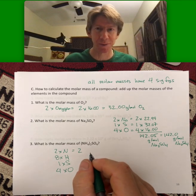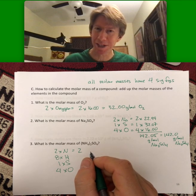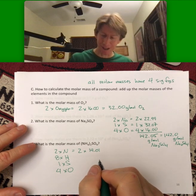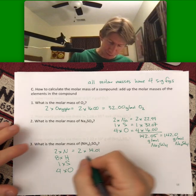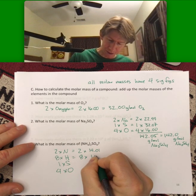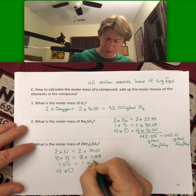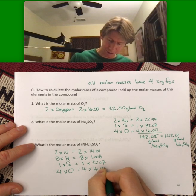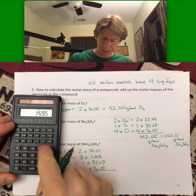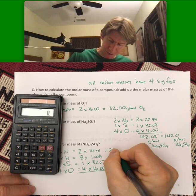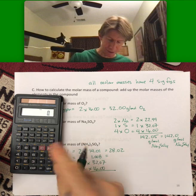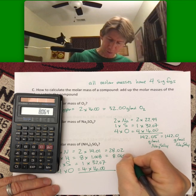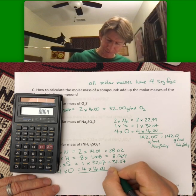We're going to do molar masses 50 to 100, maybe even 150 times. So, but I'm going to do it out this last time at least. Two times 14.01. Eight times 1.008. One times 32.07. Four times 16.00. This is going to be 28.02. This one I never know. Eight times 1.008. I get 8.064. 32.07. 64.